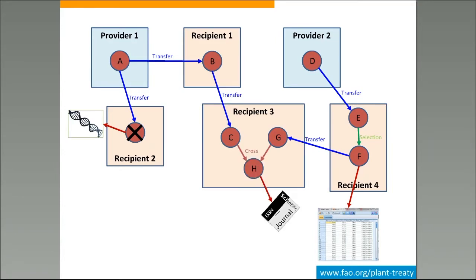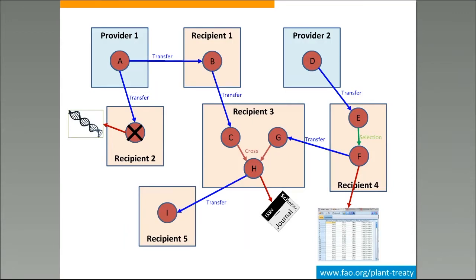Recipient 3 then performs a cross between these two materials, obtaining a new one called H with a new DOI H, and on this one there is a publication of research results. Recipient 3 also transfers this new material to recipient 5, who also publishes some results. As you can see, there is quite a complicated life and evolution of these materials — they are transferred, crossed, and selected, and there are publications about them at different stages of their life.